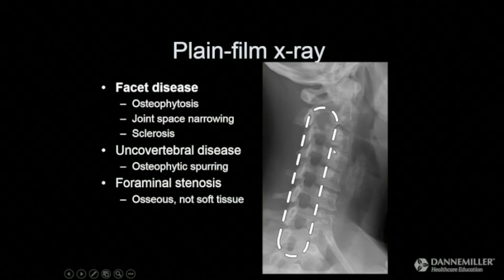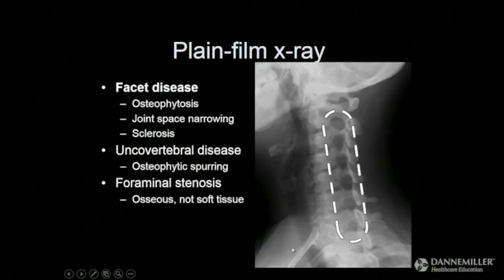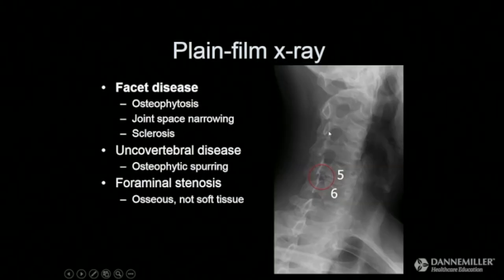Oblique views in the cervical spine give us a really good look down each of the neuroforamen. These are normal radiographs in the cervical spine, so you can see that there is absolutely no osseous neuroforaminal stenosis, which can occur from facet disease as well as due to uncovertebral joint disease.